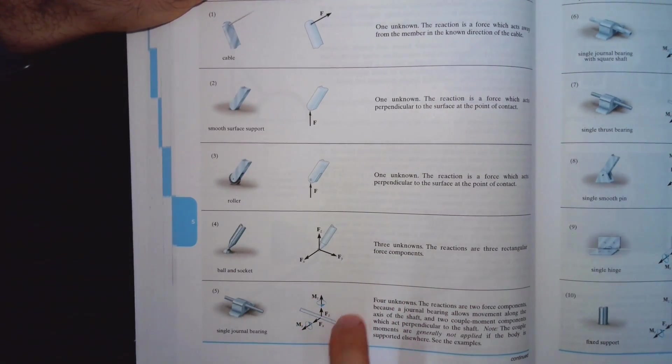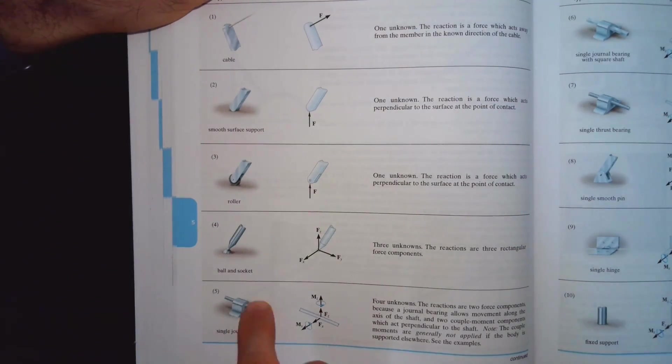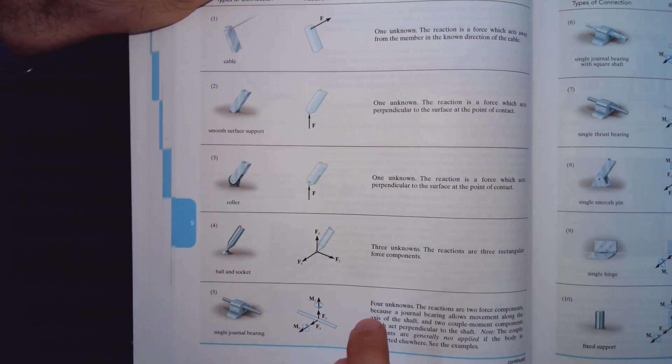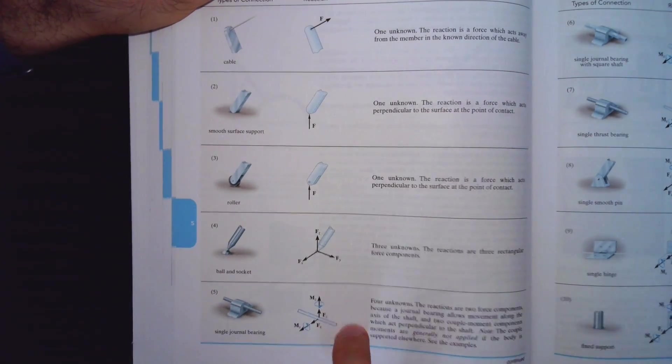You would see in this case you have two reactions. If there is a movement then you are not going to have the force. For that reason you don't see any Y force or any Y reaction in this system. Similarly, if it is free to rotate around a certain axis, you are not going to have the moment reaction.